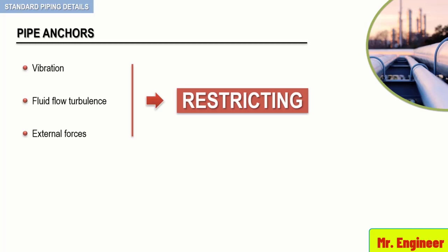To prevent movement or to control the direction of movement, pipe anchors are often used. Two types of pipe anchors exist: fixed and directional. Let's have a closer look at both types.